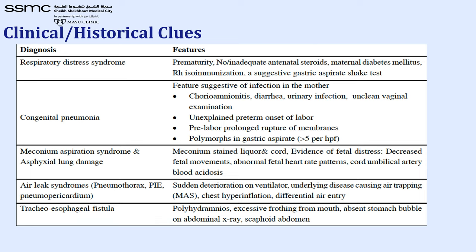Clinical and historical clues: respiratory distress syndrome most commonly occurs in premature babies less than 35 weeks. Congenital pneumonia can happen in any baby but most commonly with maternal chorioamnionitis, urinary infection, unclean vaginal examination, unexplained onset of labor, polymorphs in gastric aspirate, or prolonged rupture of membranes. Meconium aspiration syndrome presents with meconium-stained liquor. Air leaks — pneumothorax, pulmonary interstitial emphysema, pneumopericardium — occur with sudden deterioration in previously stable babies, especially with meconium aspiration, ventilator use, or chest hyperinflation and differential air entry.